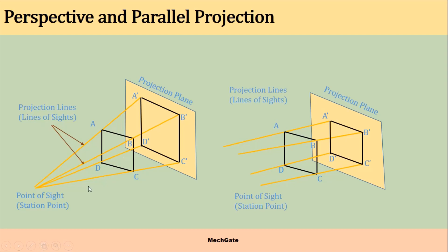The yellow lines are known as projection lines, also known as lines of sight. The point of sight is also known as the station point. Similarly, in parallel projection, these are the projection lines or lines of sight, and the point of sight is at an infinite distance.